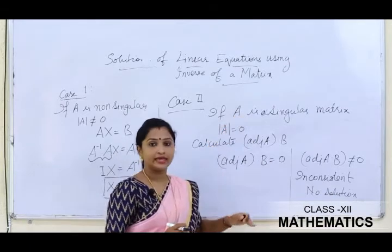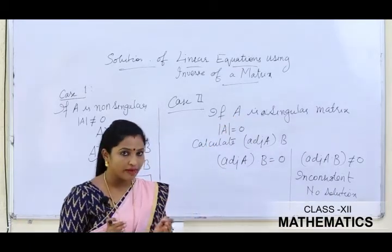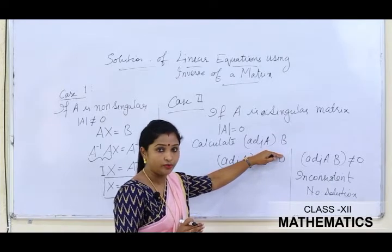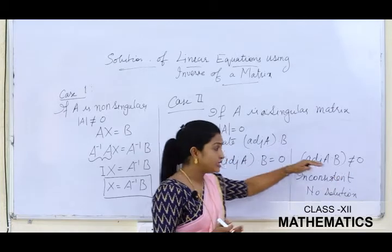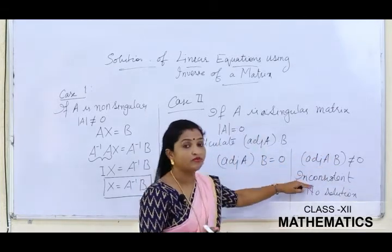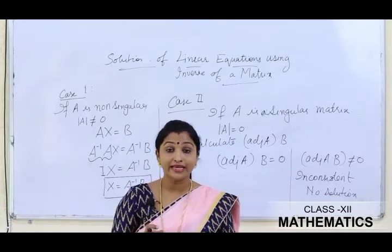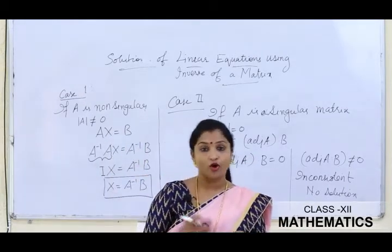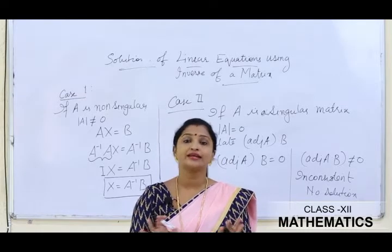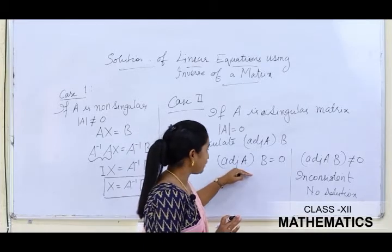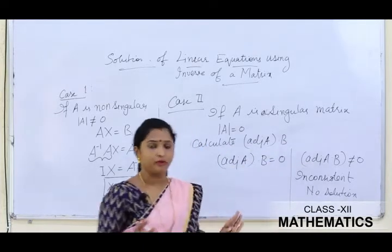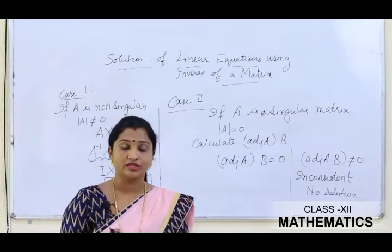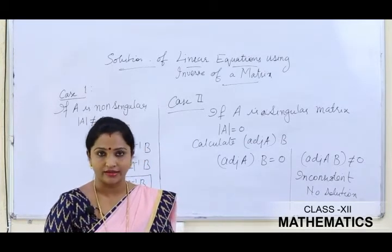If adj(A)·B equals zero, then it may be either consistent or inconsistent. This part is not very important from the examination point of view — normally questions ask you to find the unique solution. But you should know that if det(A) = 0 and adj(A)·B = 0, the system may be consistent with infinitely many solutions or inconsistent.